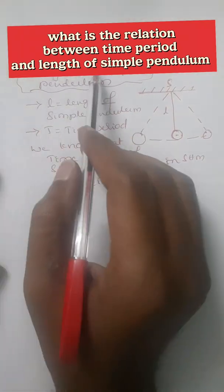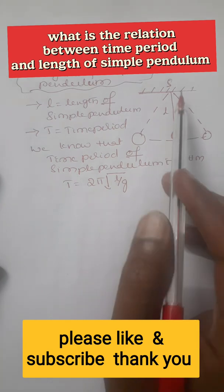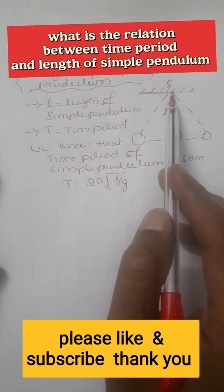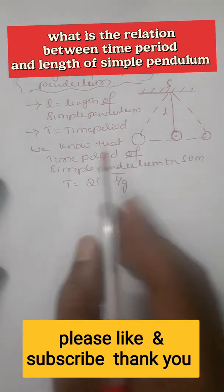What is the relation between time period t and length of simple pendulum? It is a simple pendulum with a point of suspension, where l is the length and t is the time period.